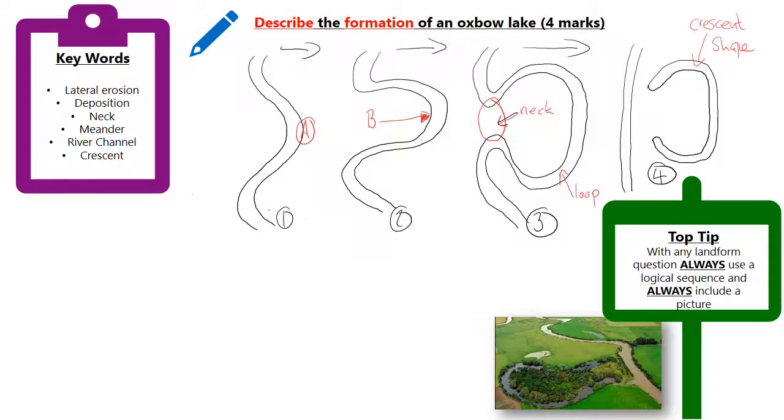This question asks you to describe the formation of an oxbow lake and it has four marks. Because it's a describe question, we know that means we've got to make four points. If it was explained it would be two points, but because it's described it's four. I've highlighted describe the formation. Whenever you get a question which says formation, you know that means you've got to describe the logical sequence.